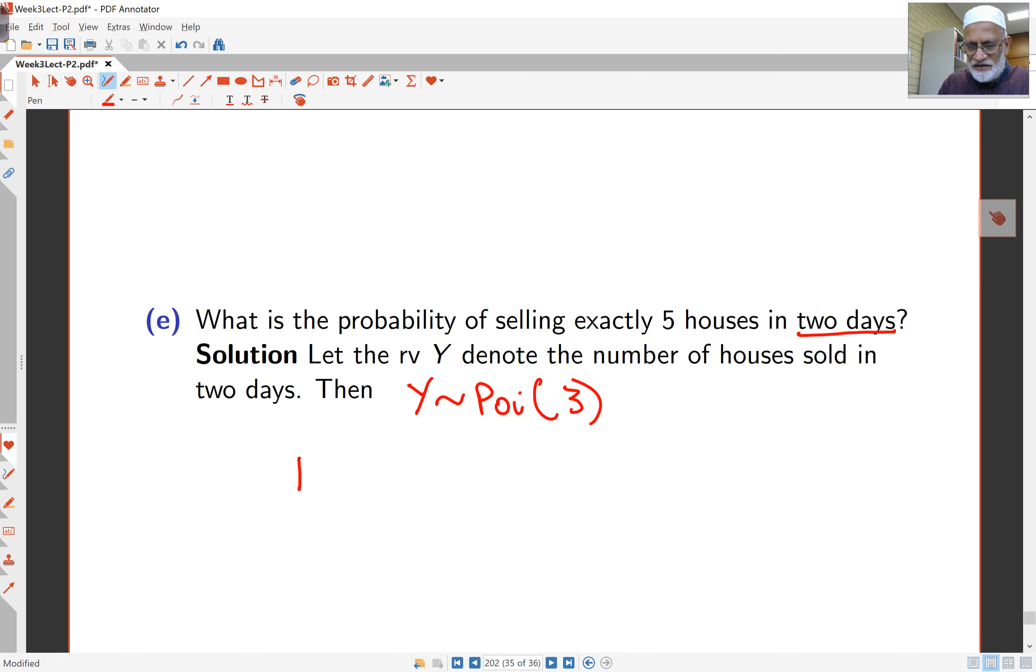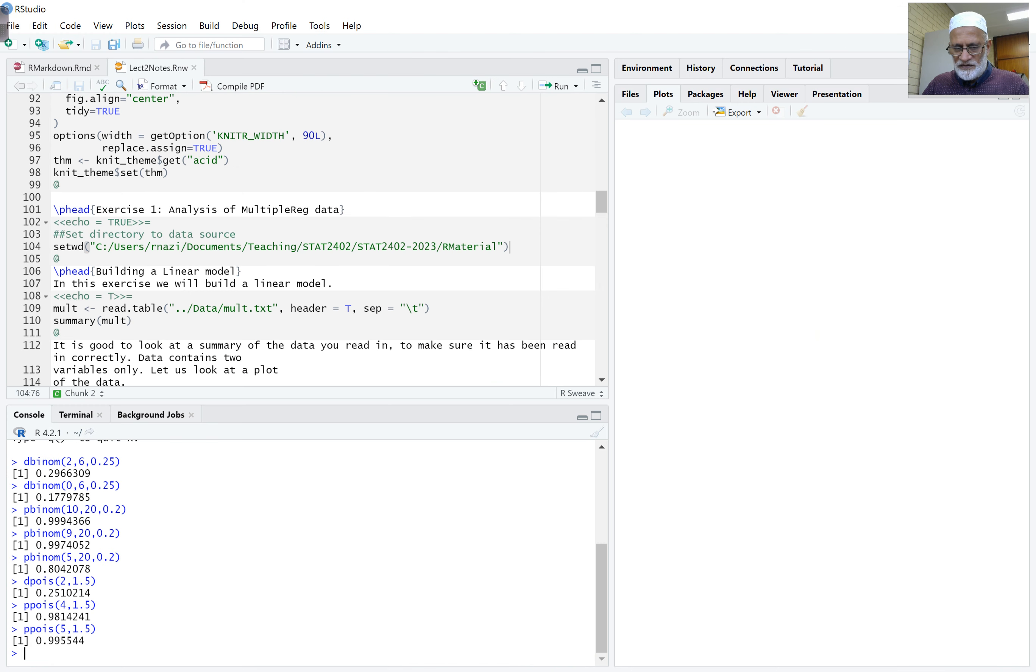Now exactly 5 houses here. So nothing different from before. Exactly 5 houses. I just go to R again. Exactly 5 houses. So I want the dpois. And my mean has changed now to 3. And I'm wanting exactly 5 houses. So it's 5 here. And it's 0.1755.